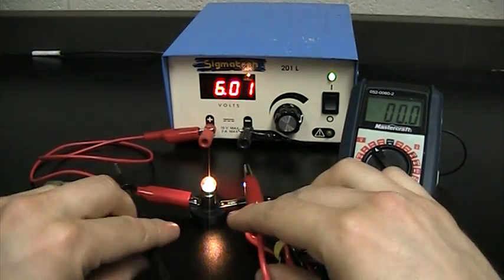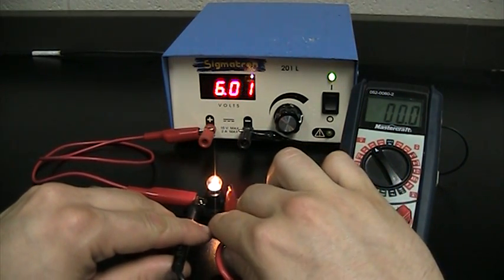Voltmeters are the simplest in terms of actual physical wiring in that you simply put them on either side of what you're testing.